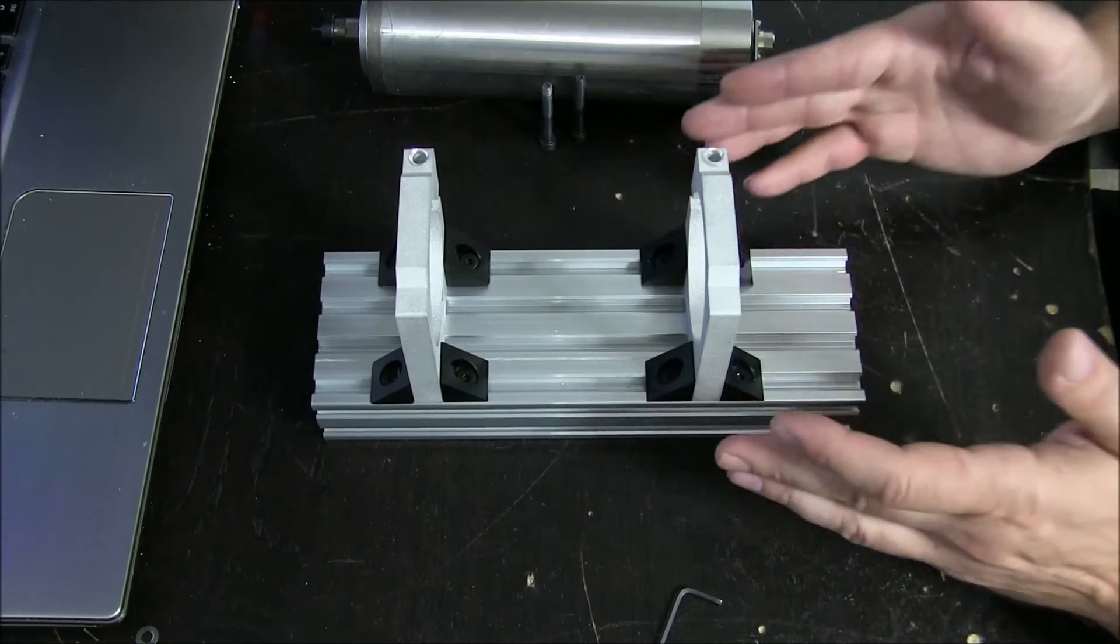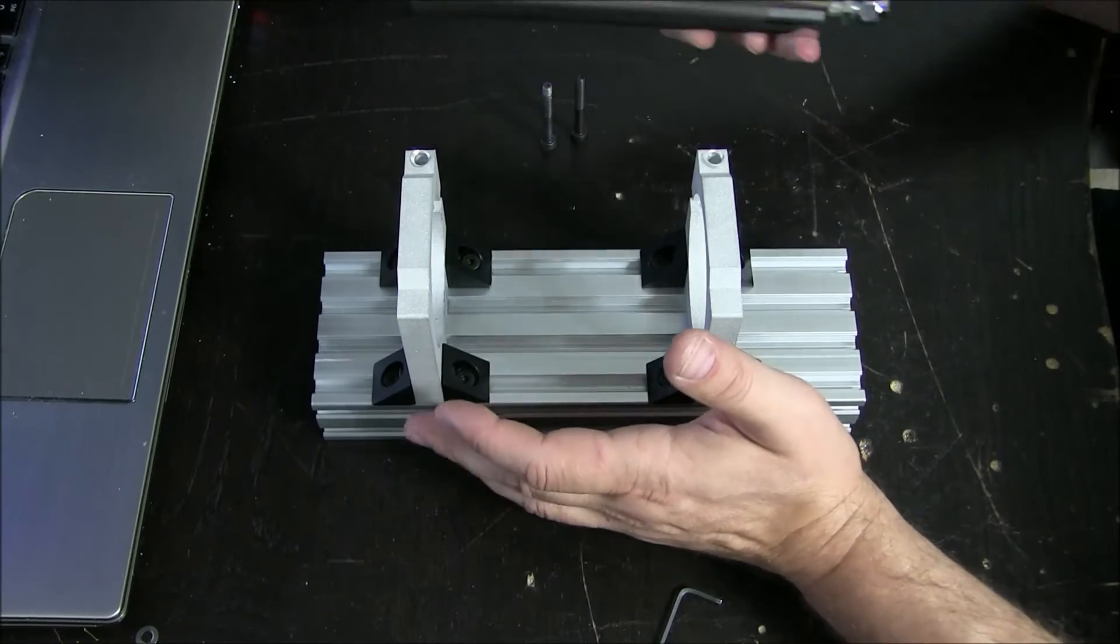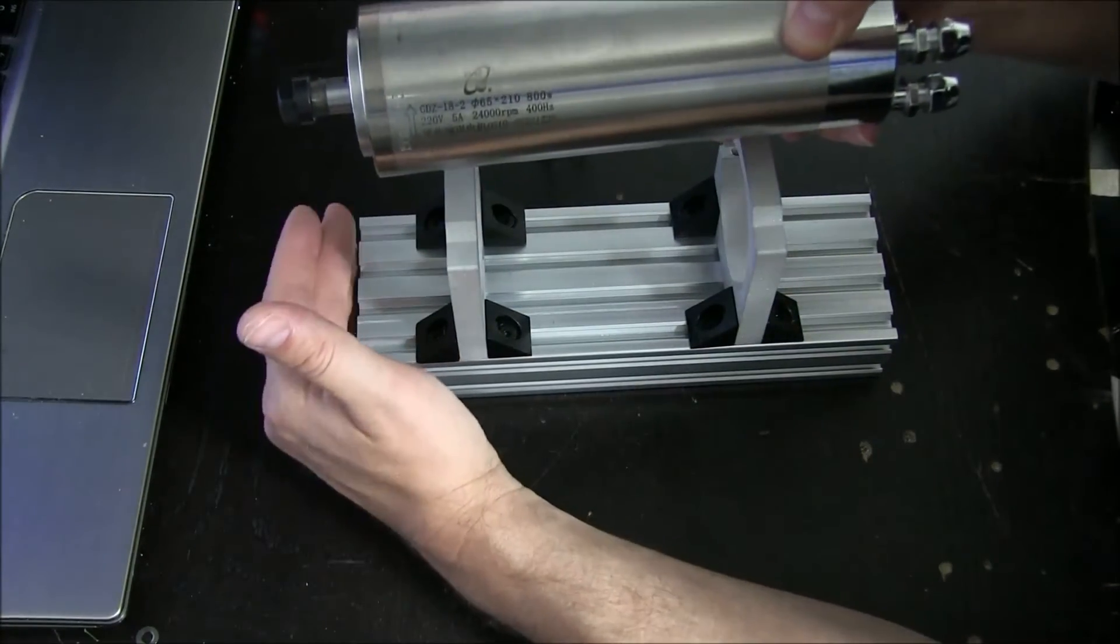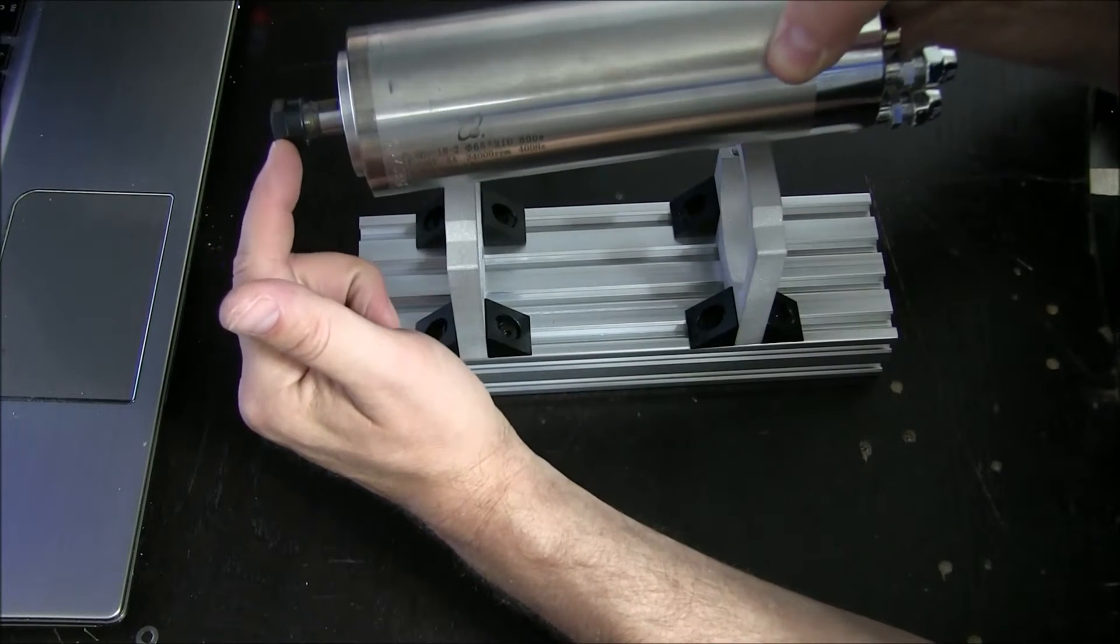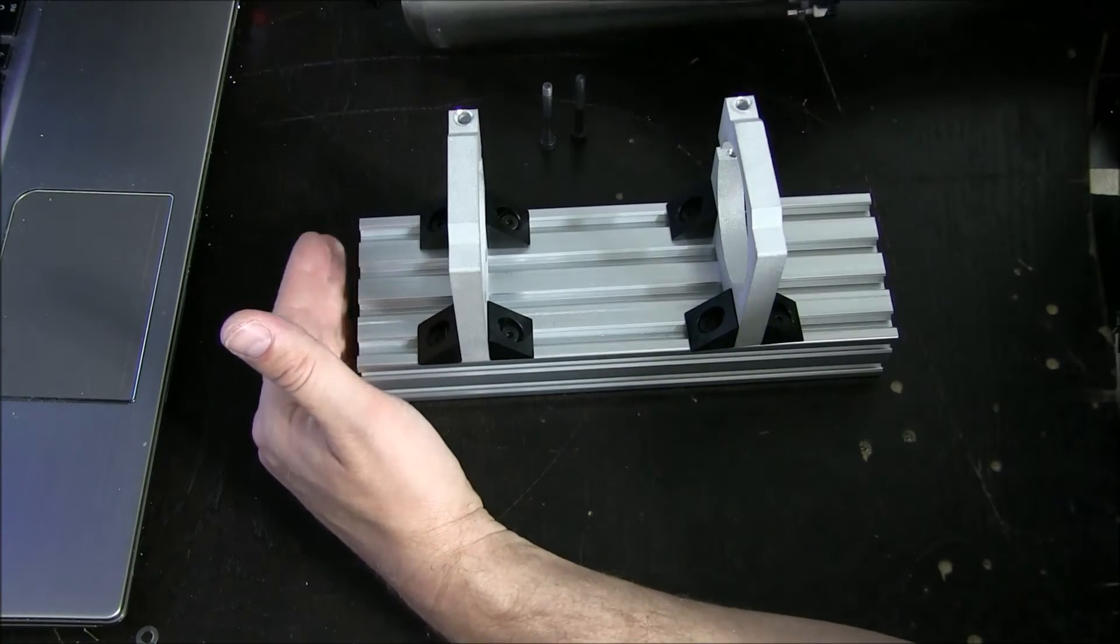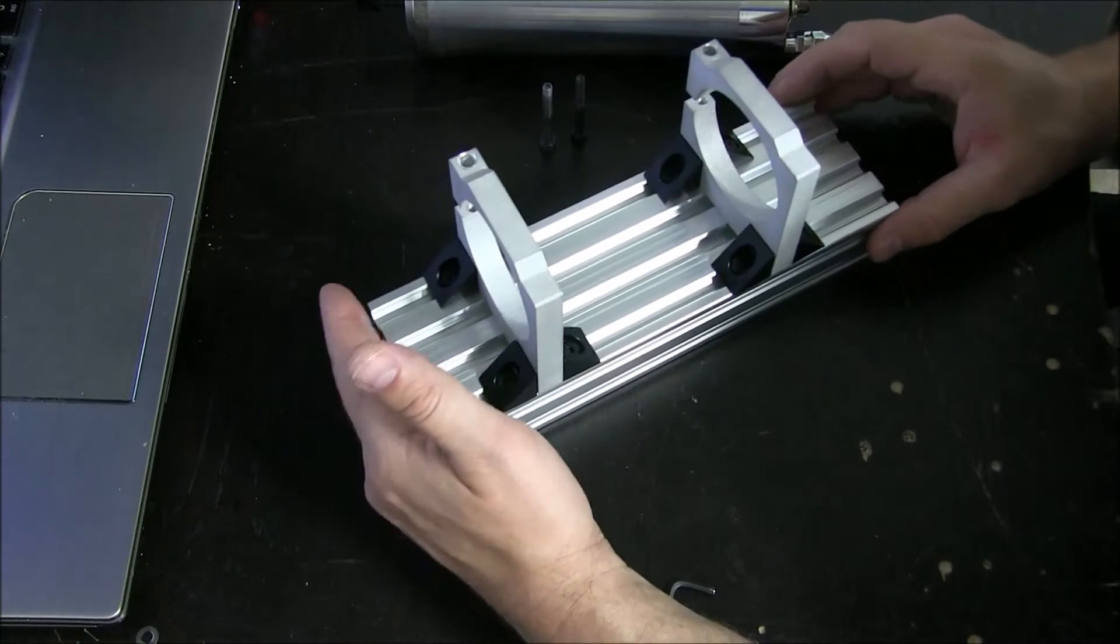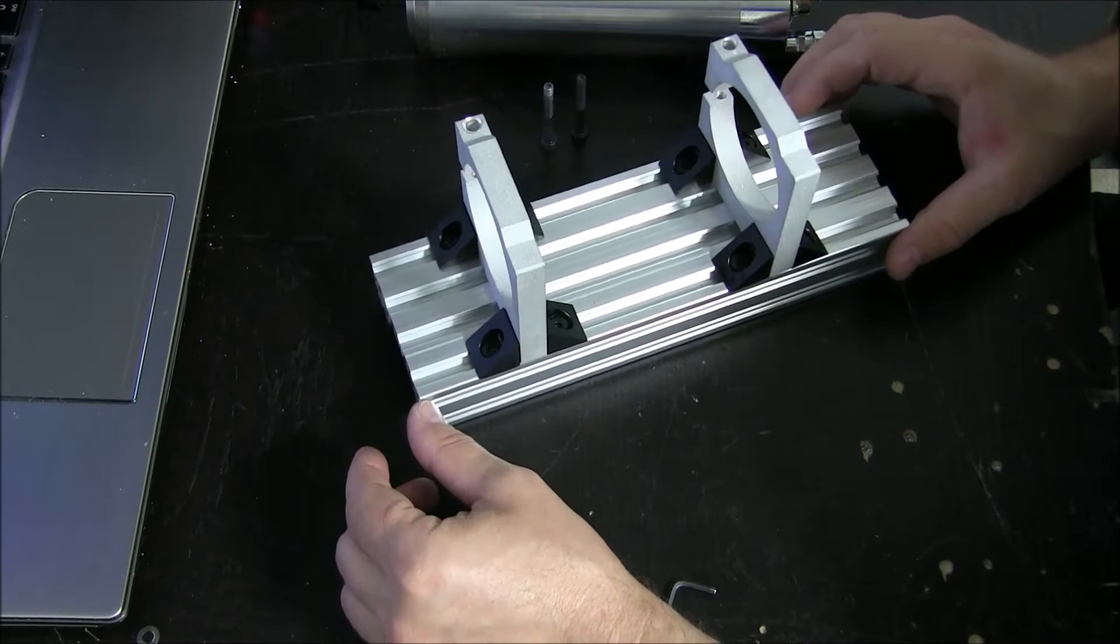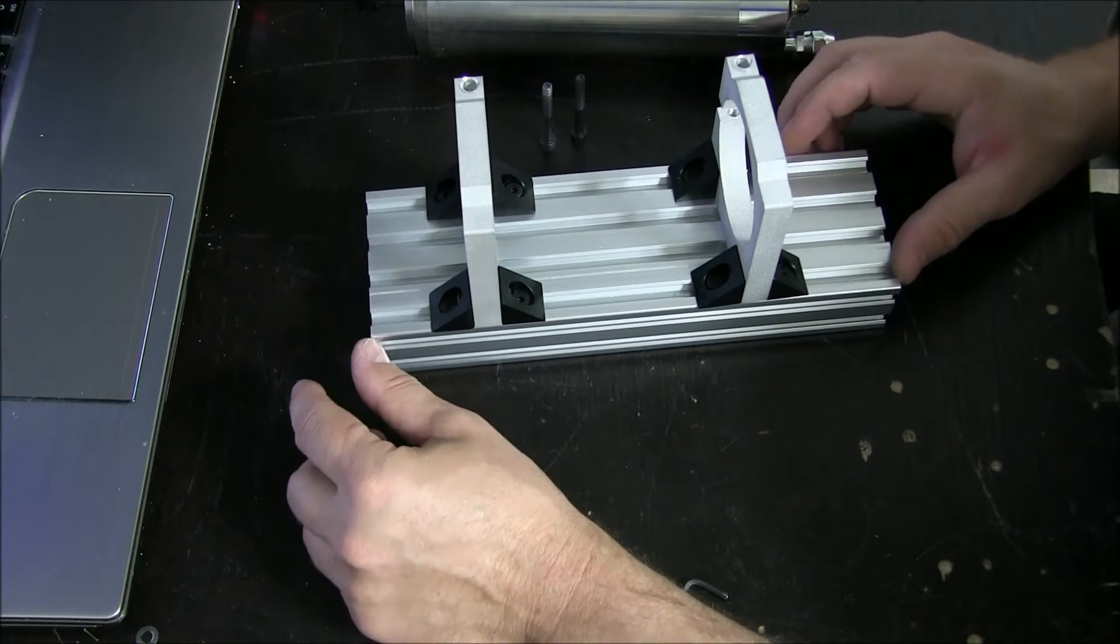But either way, with this right here, use this to set the height of the spindle. Now ideally, when we're machining, we never want the base, even when the end mill is fully buried, to drag across the work surface. And we have a pretty thick - we'll use the standard OpenBuilds C-beam end plate here. It's a little over half an inch. I believe it's 40 millimeters.